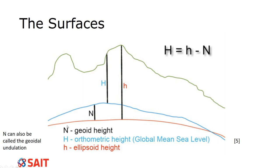Number two is the ellipsoid — this red line here is that surface. And then we have something called a geoid, which is this blue line. I'll get into more detail on the next slide, but I just want you to see how they relate. Sometimes the ellipsoid is actually higher than the geoid, and sometimes the geoid is higher than the ellipsoid, so it might seem a little confusing, but we'll get to it.